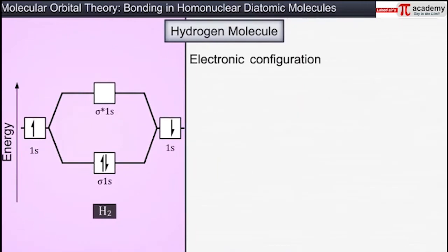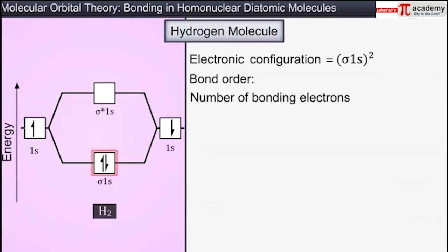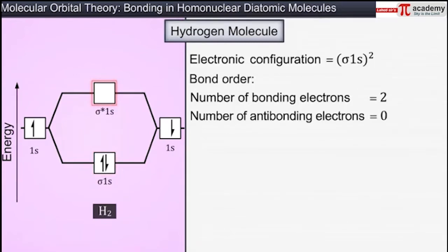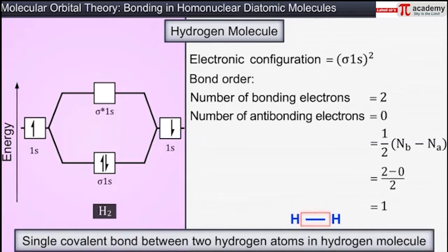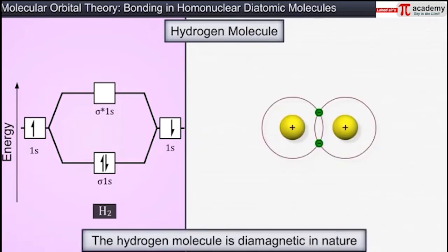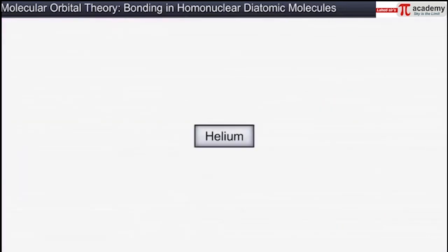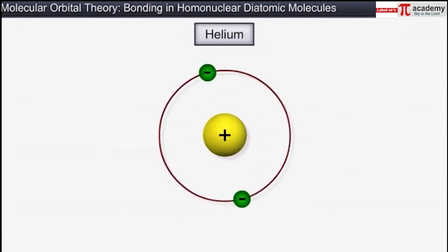The electronic configuration of a hydrogen molecule is sigma 1s². The number of electrons present in the bonding orbital is 2 and no electrons are present in anti-bonding orbitals, so the bond order is equal to (2 minus 0) divided by 2, which equals 1. This shows that there exists a single covalent bond between the two hydrogen atoms. The hydrogen molecule is diamagnetic in nature as no unpaired electrons are present in its molecular orbitals.